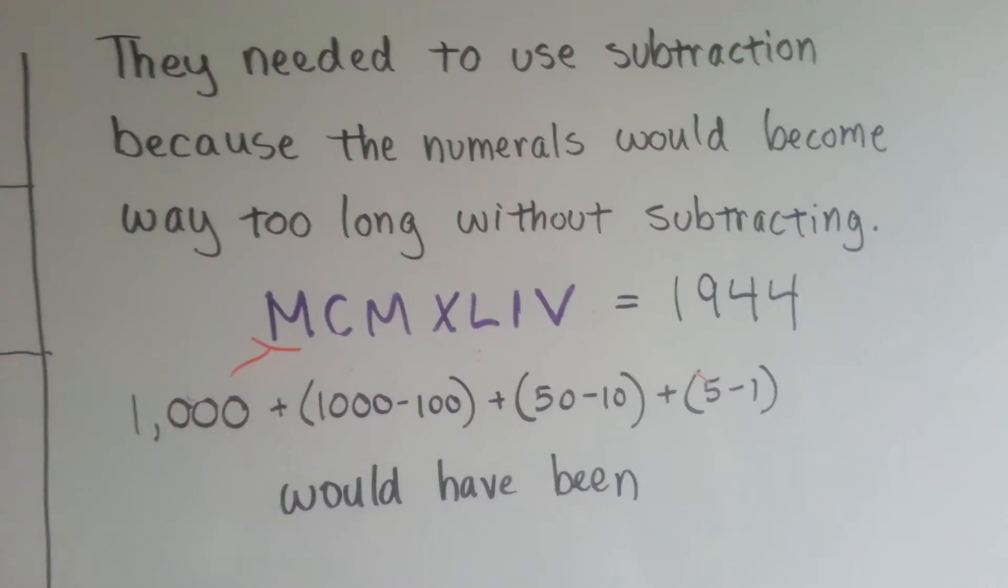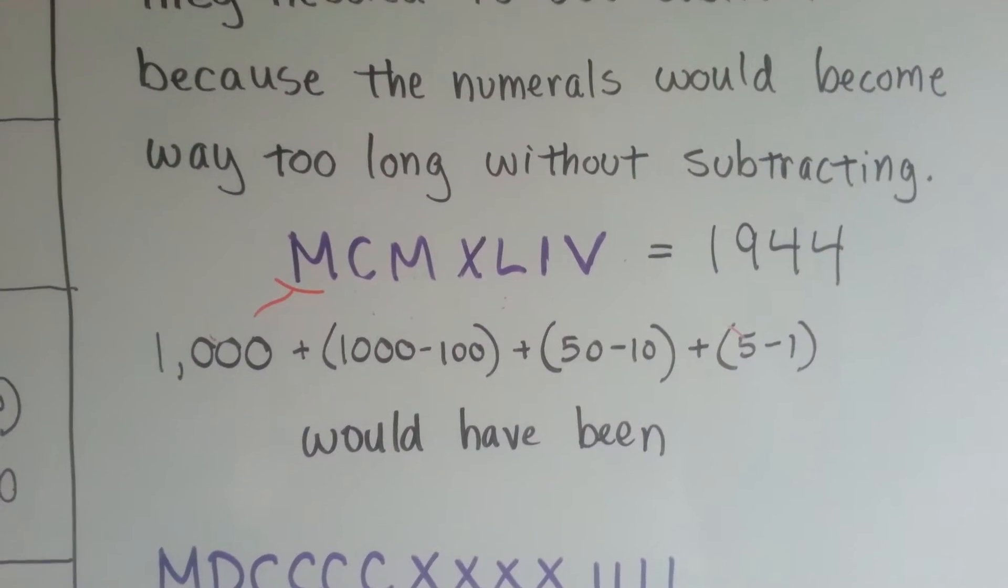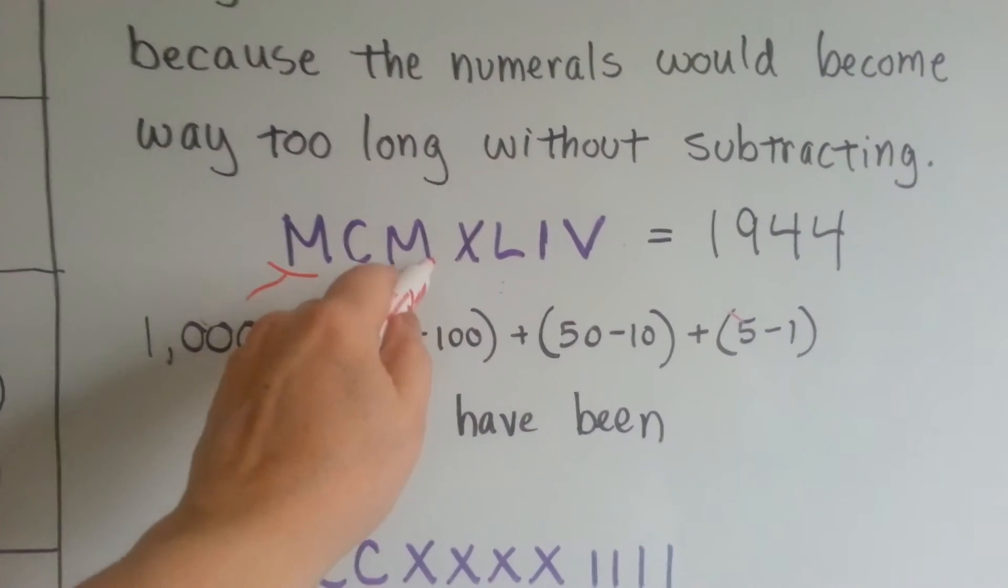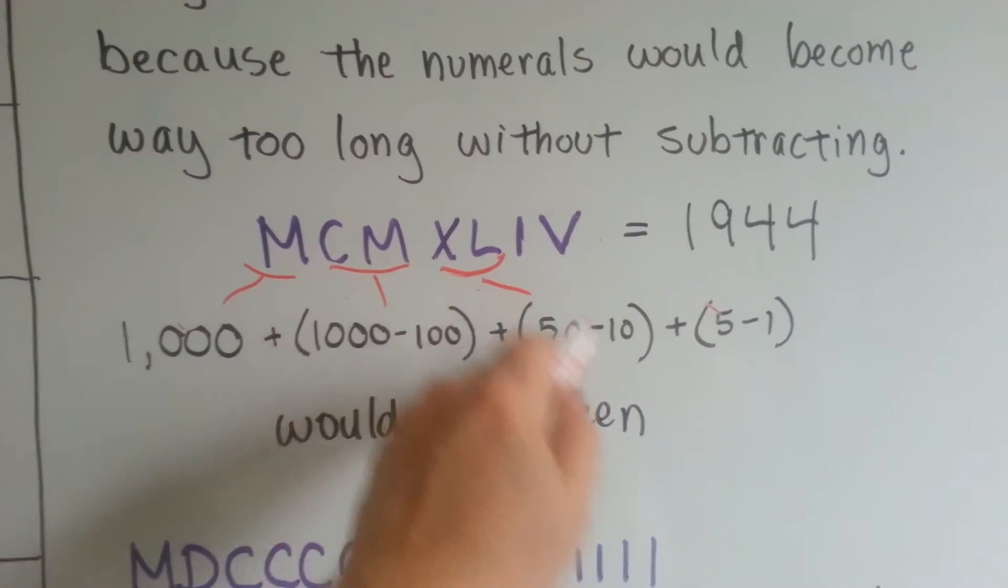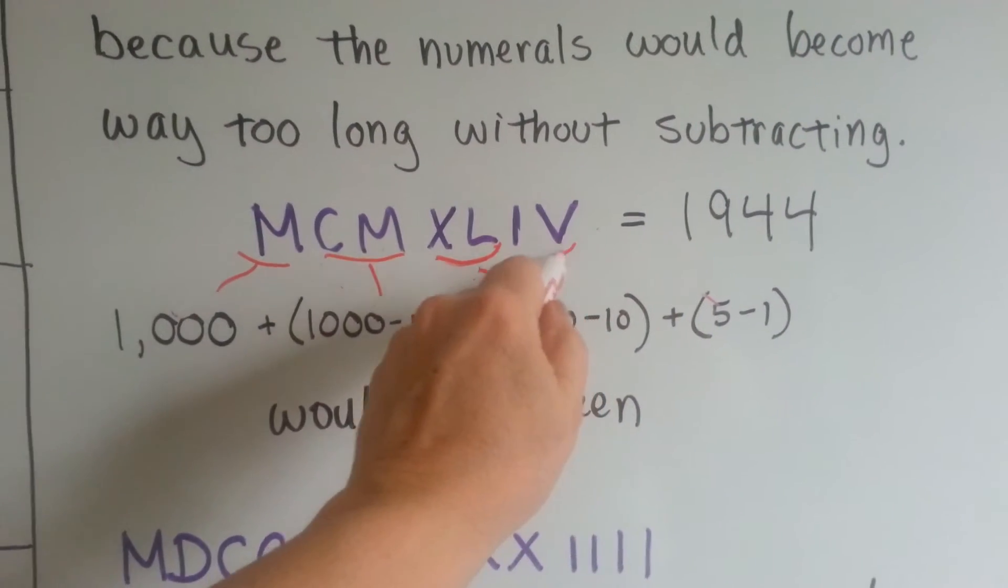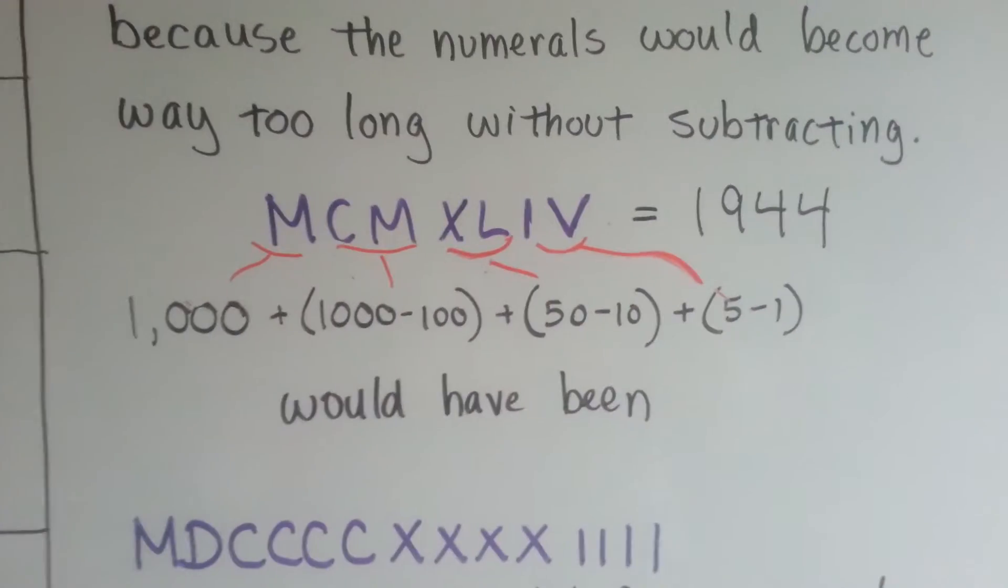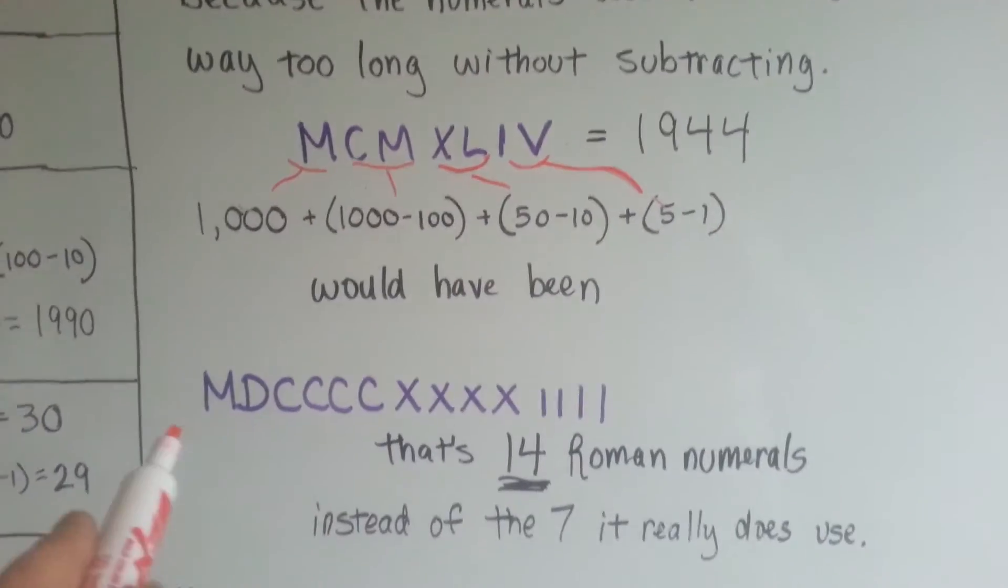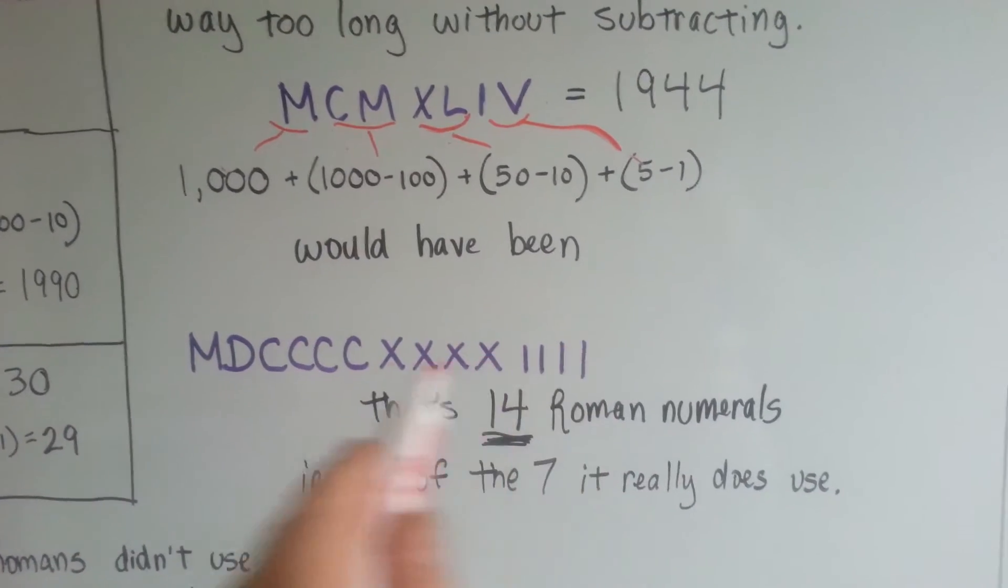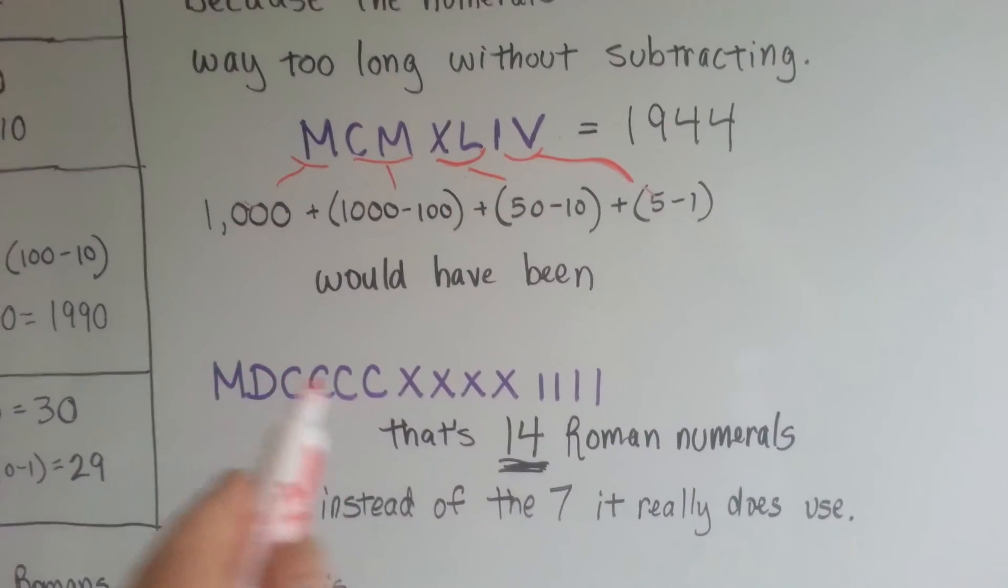The M, right here, means 1,000. And then the CM, right here, means 1,000 minus 100. The XL means 50 minus 10. And then the IV means 5 minus 1. If they didn't do subtraction, they would have had to use 14 symbols to represent 1944.